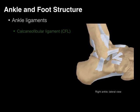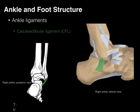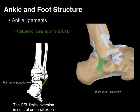The calcaneofibular ligament, or CFL, attaches from the calcaneus to the fibula. Looking at the back of the right ankle from a posterior view, this ligament is going to limit inversion in a neutral or dorsiflexed position. The CFL's greatest strain occurs when an inversion moment is applied with dorsiflexion.